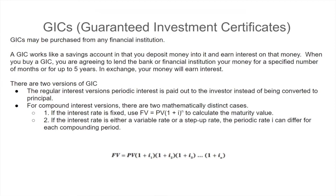A GIC is a savings account that is not a flexible savings account, meaning you can't go in and take the money out easily. When you give it to the bank, you're promising them to be able to hold on to that money for a length of time. In return for that, they're going to pay you interest — they're basically renting money from you. That's effectively what a GIC is.